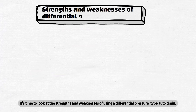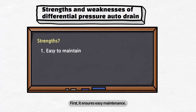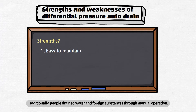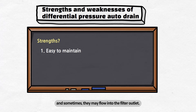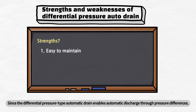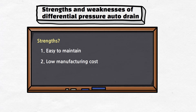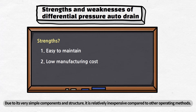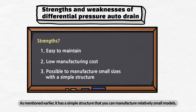Now let's look at the strengths of using the differential pressure type auto drain. First, it ensures easy maintenance. Traditionally, people drained water and foreign substances through manual operation. But if the operator forgets to drain, the bowl can overflow with moisture and foreign substances and they may flow into the filter outlet. Since the differential pressure type automatic drain enables automatic discharge through pressure differences, it prevents overflowing and eliminates the need for frequent drain checks. Second, it has a low manufacturing cost due to its very simple components and structure, making it relatively inexpensive compared to other operating methods. Third, it is possible to produce small models thanks to its simple structure.